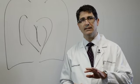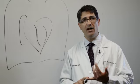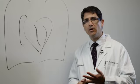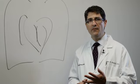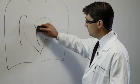The two valves on the right side are the tricuspid valve and the pulmonic valve. The two valves on the left side are the mitral valve and the aortic valve. The ones on the left side are most commonly diseased, so we'll talk in more detail about them.